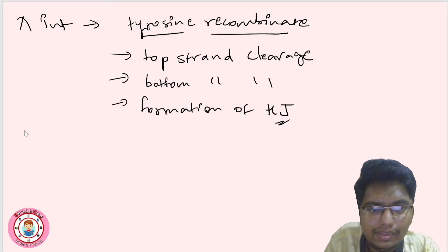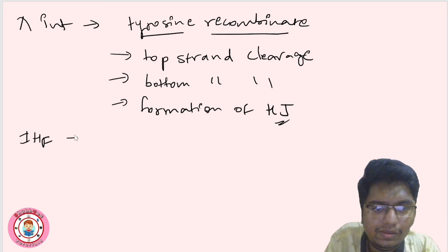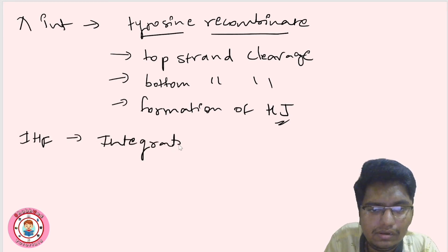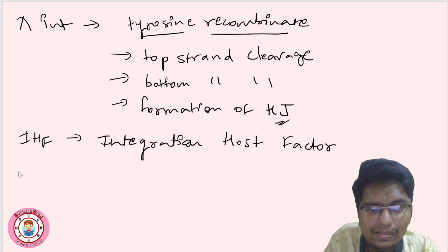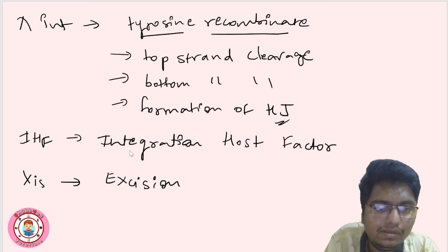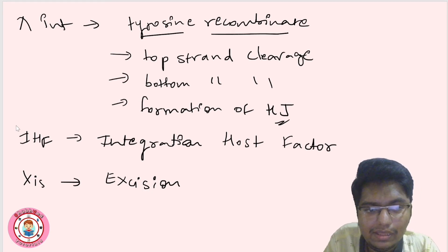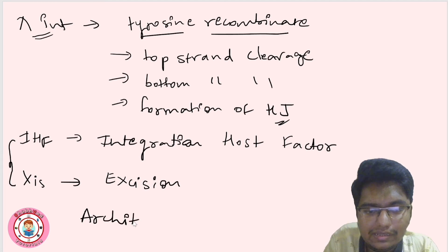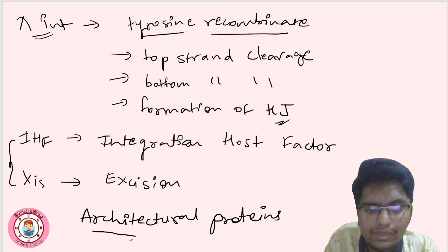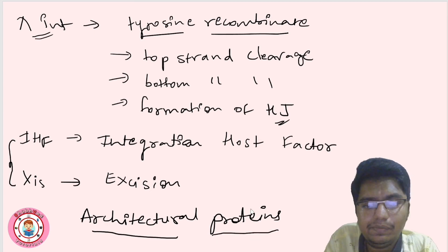The next protein is Integration Host Factor (IHF), which is very important for integration. XIS is important for excision. Lambda integrase is the recombinase, while IHF and XIS are called architectural proteins. These are accessory proteins which are important for the process to occur.